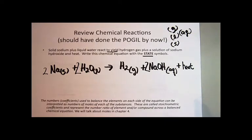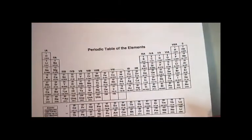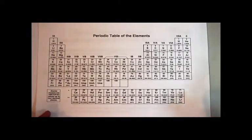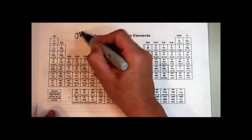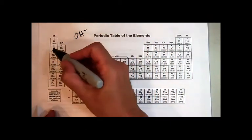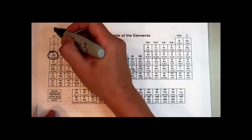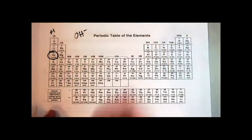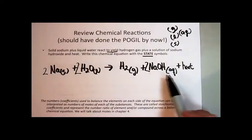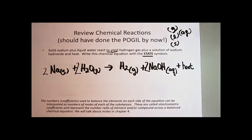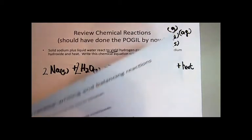When balancing, you can use a periodic table if needed. For hydroxide you must memorize it carries a minus one charge. For sodium, find it in group one on the periodic table — it carries a plus one charge. That tells you how to write the formula for the ionic compound sodium hydroxide, NaOH.